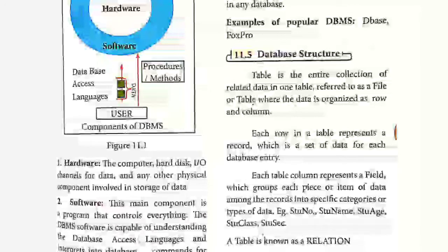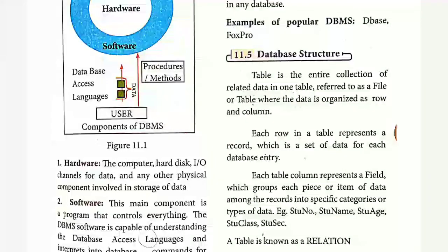Now we are going to see database structure. A database is essentially a table which consists of rows and columns. A table is an entire collection of related data, referred to as a file or table. A single collection of data which is related to each other is combined together to form a table, otherwise called a file. It is organized in rows and columns. Each row in a table represents a record, which is a set of data for each database entity.